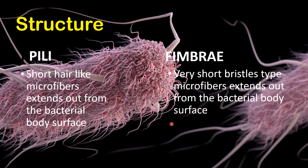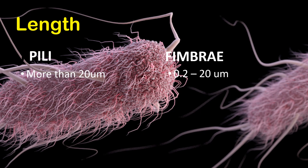You have to note that in some books it is also mentioned that pili are of two types: attachment pili and sex pili, as I already told you in my previous video. The attachment pili is called fimbriae — so attachment pili and fimbriae are the same. Next is length: pili range from 20 micrometers or more, whereas fimbriae are short structures ranging from 0.2 to 20 micrometers.